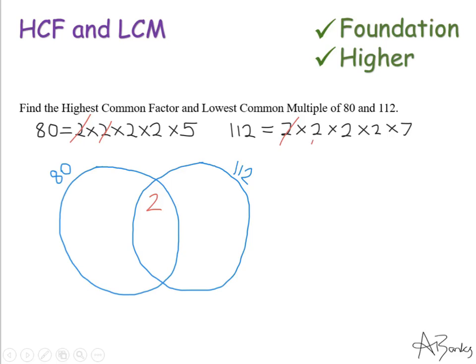There's another 2 in both, so I put another 2 in. And another, and another — four 2s in total in the middle section, as that's all they have in common. Now I'm down to numbers they don't share. In the 80 list I have a 5, and in the 112 list I have a 7, so I place those in their respective outer sections. That's the Venn diagram complete with all numbers in the correct sections.